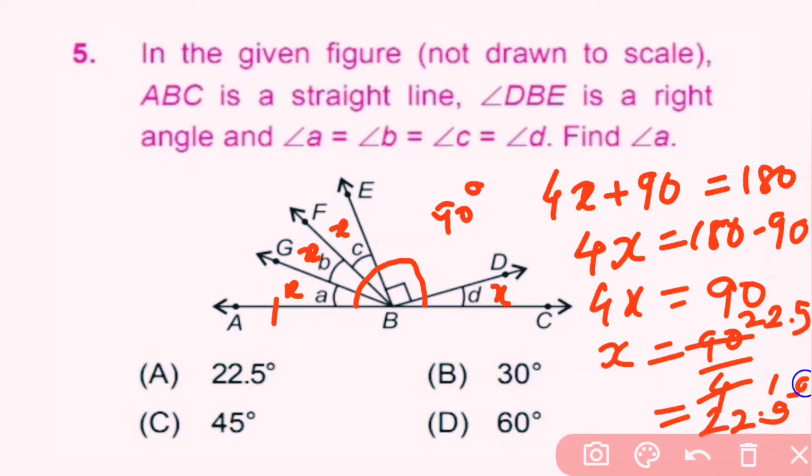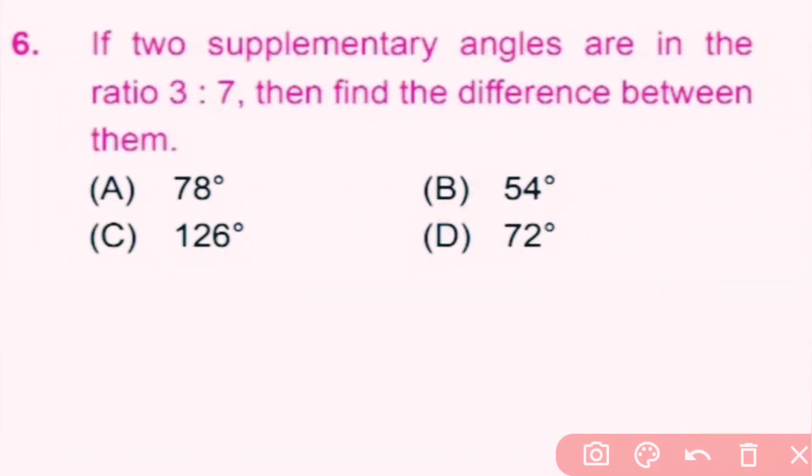So 4x equals 180 minus 90, which gives 4x equals 90. Therefore x equals 90 divided by 4, which equals 22.5 degrees. So angle A is 22.5 degrees. A is the correct answer.